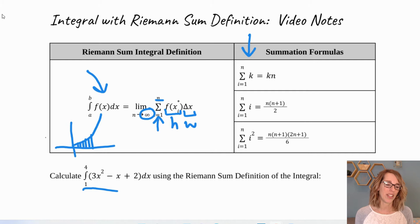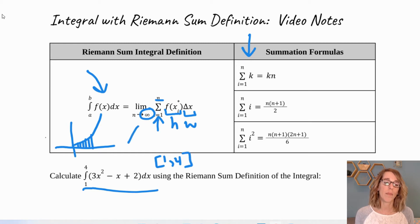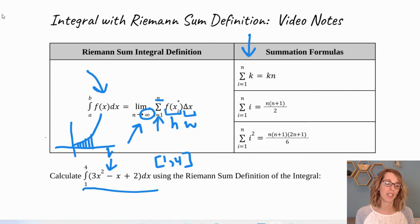Here's our example. We're going to calculate this definite integral — I'm looking for the area under this curve from x equals 1 to 4, so we're on the interval 1 to 4. You'll notice the integral notation replaces the summation: the function value is the height, and instead of delta x we've got dx, which also represents the width.